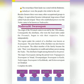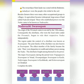The reign of Perumals came to an end by the 12th century. Consequently, the chieftains who were the local rulers under the Perumals began to rule their respective Nadus independently. The region under the control of a chieftain was known as Swarupam.